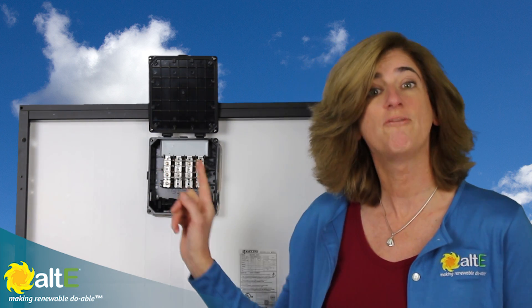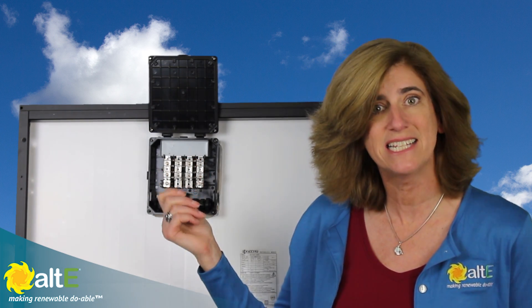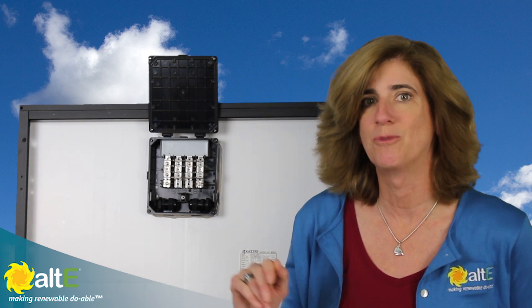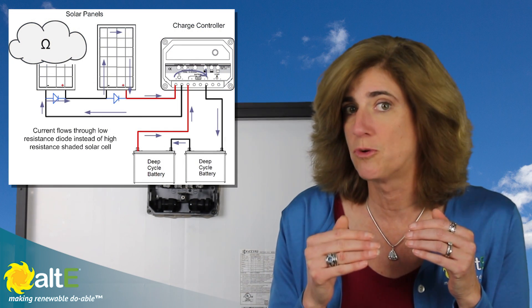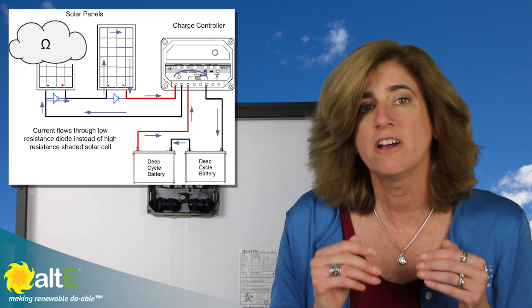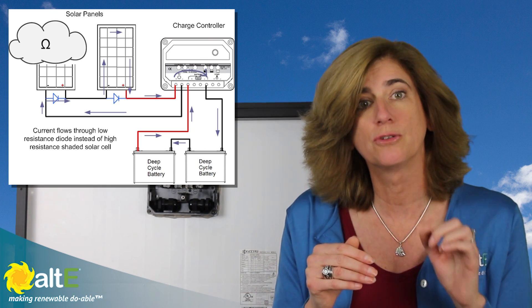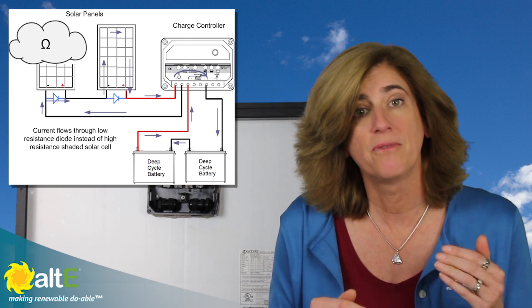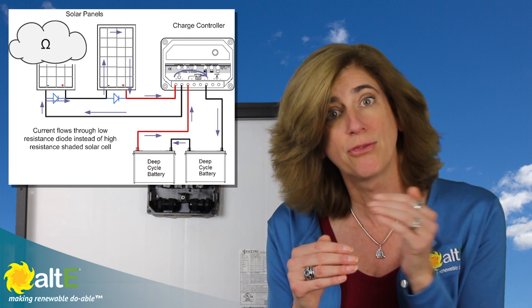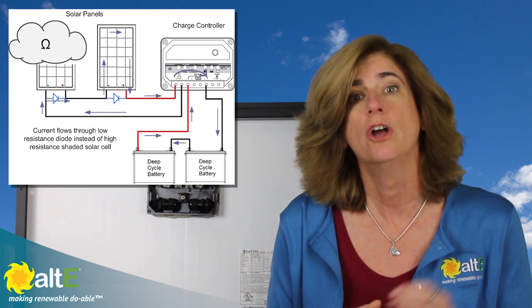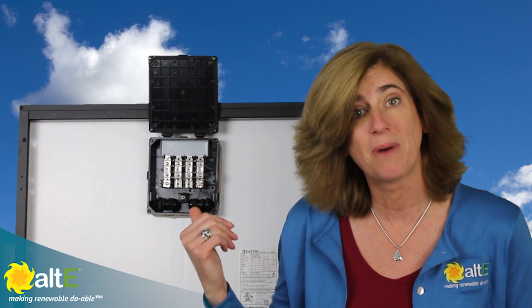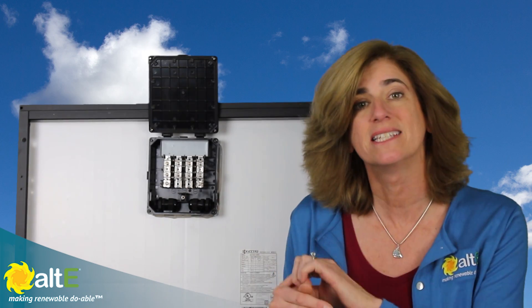Most solar panels have bypass diodes built in these days, so you don't have to worry about that anymore. However, if you have multiple solar panels wired together in series and you consistently have shading on one or more of the solar panels, wiring a bypass diode in parallel across the shaded panel can prevent the current from being forced back through the shaded panel, causing it to heat and lose power. So it acts the same as the internal bypass diodes, but bypasses the entire panel instead of the individual cells.